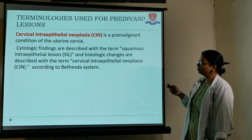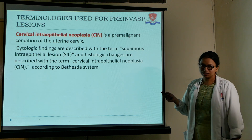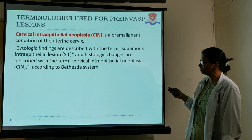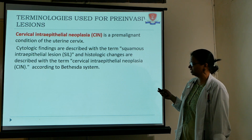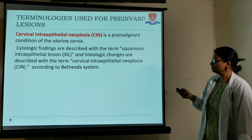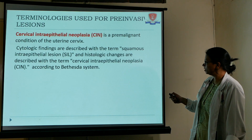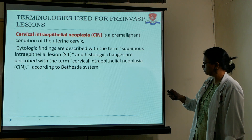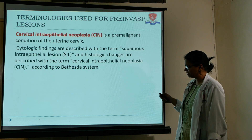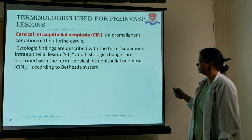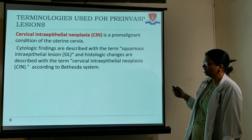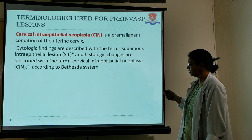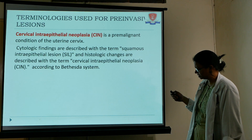The terminology used for pre-invasive lesions — a stage prior to carcinoma of the cervix — means it is not malignant but pre-malignant. We use the term cervical intraepithelial neoplasia (CIN) for this pre-malignant condition of the uterine cervix. Cytologic findings are described as squamous intraepithelial lesion and histologic changes as CIN according to the Bethesda system.